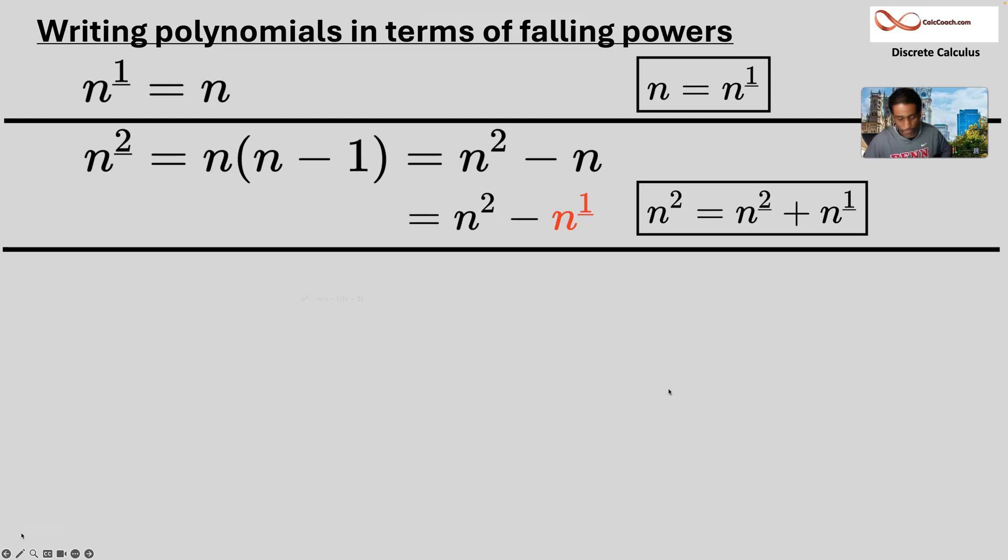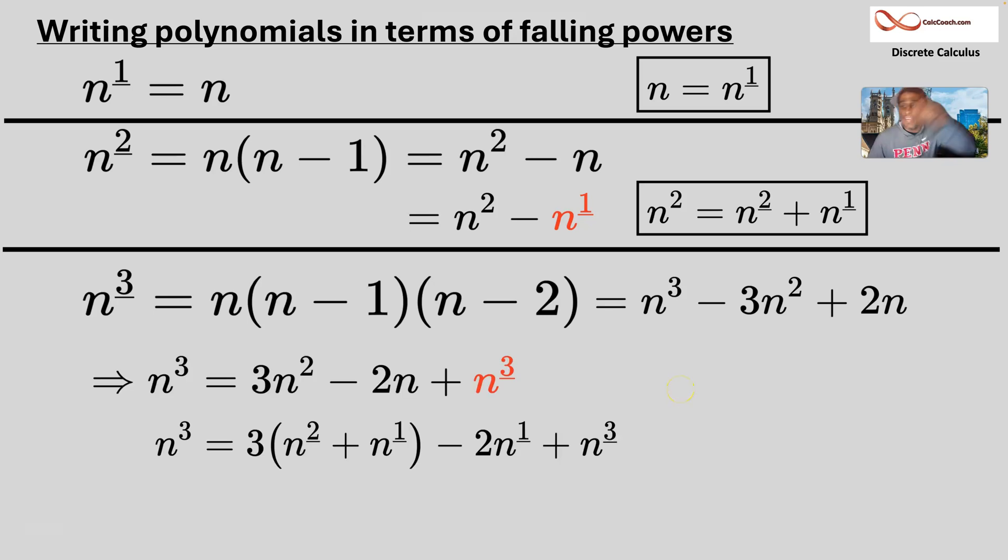N falling three. N times n minus one times n minus two. Multiply it out. Oh, we're adding those guys over to the other side. Sorry about that. Three n squared is added over. Two n is subtracted over. We're solving for n cubed in that step there.